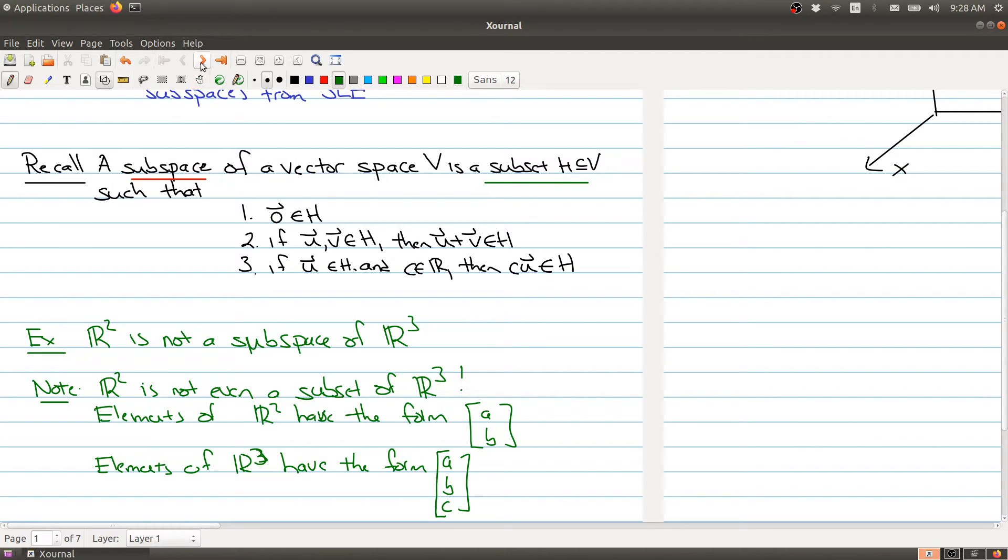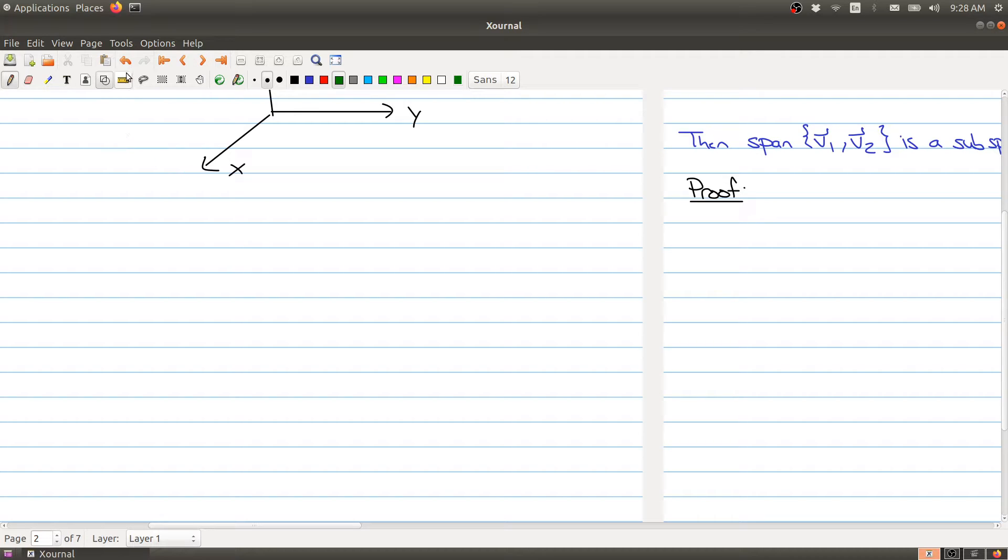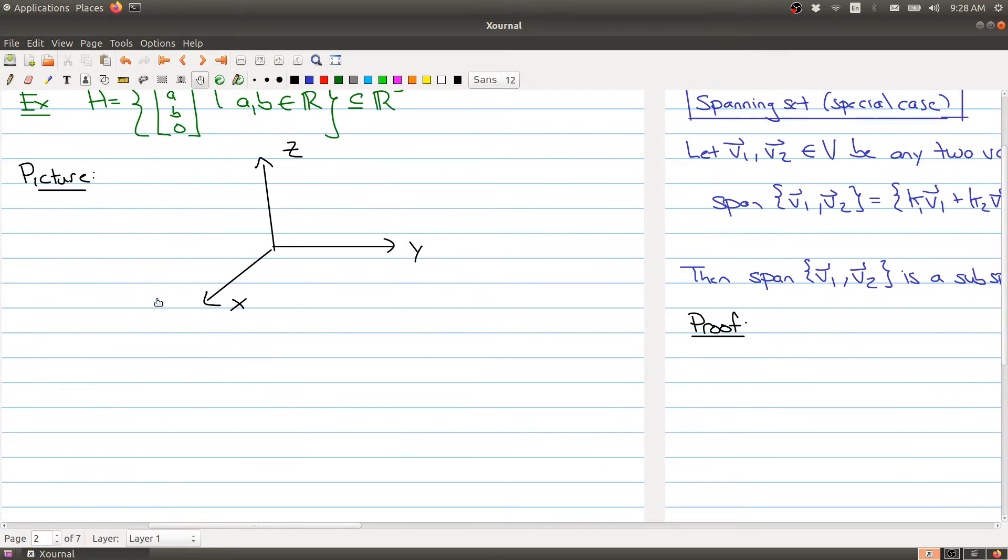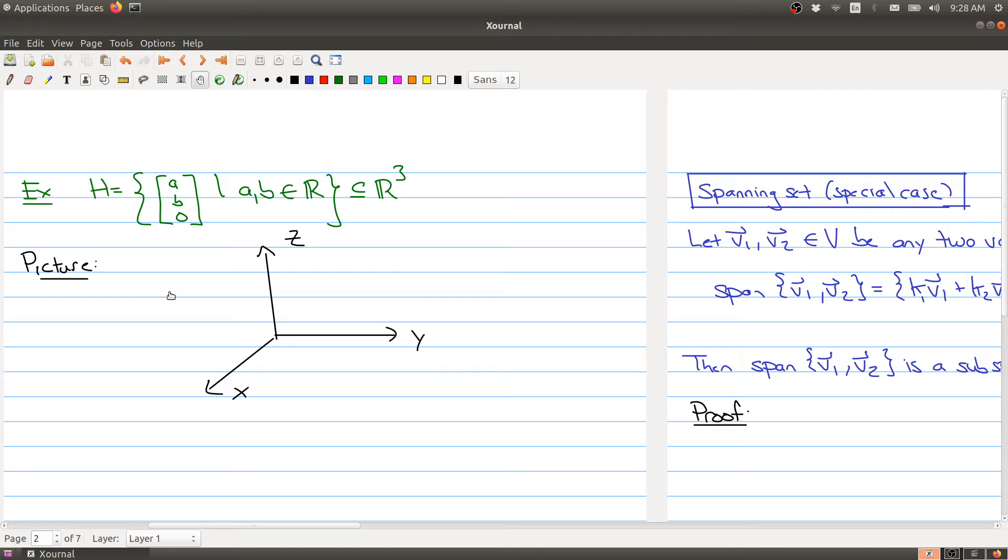So let's kind of carry on with this example. Because you may be thinking, well, that's a little strange because it looks like there should be something in R3 that behaves like R2. R2 is just a plane, and R3 is three-dimensional space, which I've kind of drawn here. So shouldn't R2 be a subspace of R3? Well, the point is that even though R2 is not a subspace of R3, there is a subset of R3 that looks like R2.